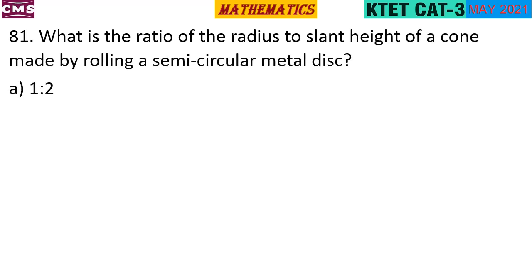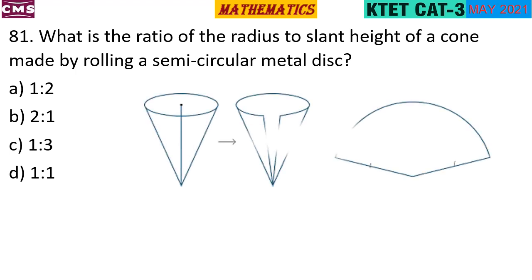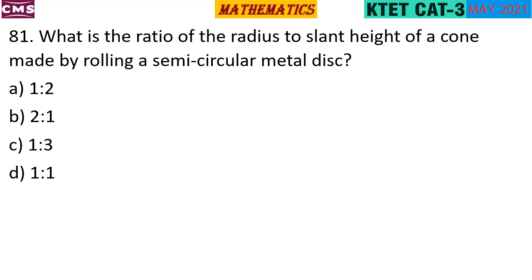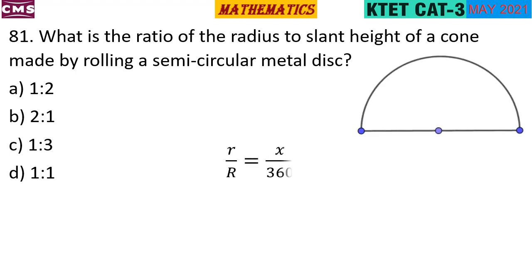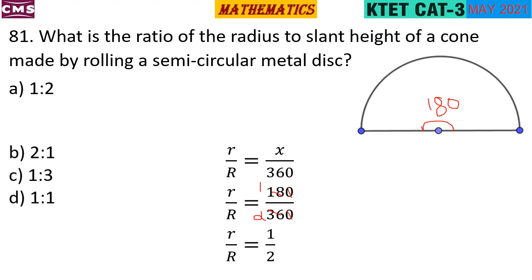What is the ratio of the radius to slant height of a cone made by rolling a semicircular metallic disc? A semicircle is rolled to form a cone. The radius of the sector becomes the slant height capital L of the cone. The central angle of a semicircle is 180 degrees. Using r over R equals angle over 360, the ratio of radius to slant height is 1 to 2.